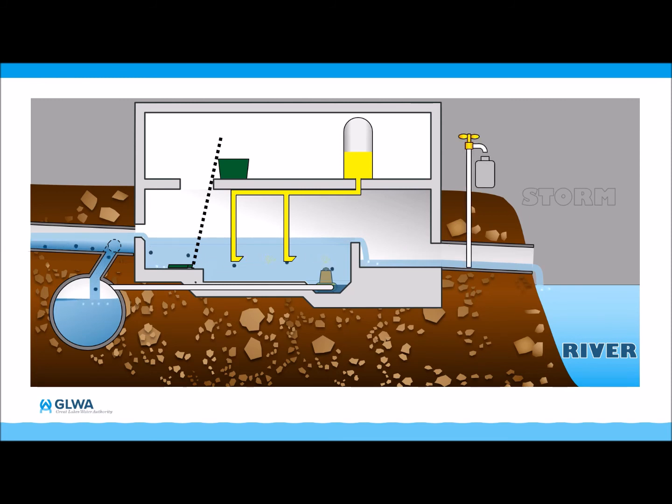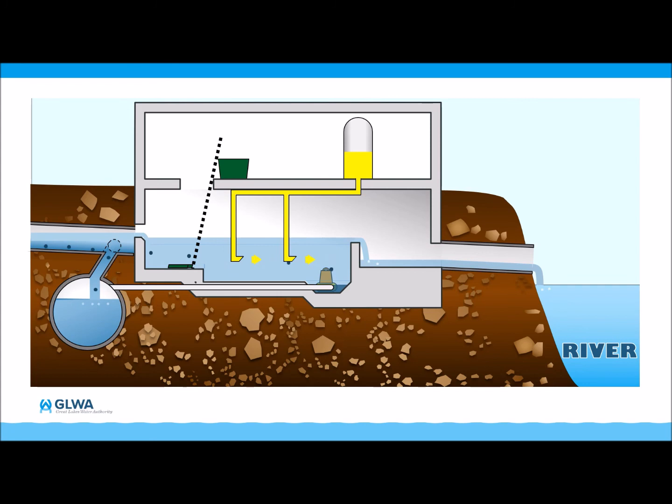We also collect samples of the CSO leaving the basin and analyze the types and amounts of pollutants being discharged. We also test for fecal coliform bacteria, microorganisms that indicate the presence of pathogens, to verify that we have sufficiently disinfected the water to meet the quality standards set by the Michigan Department of Environment, Great Lakes and Energy or EGLE.